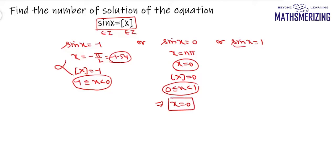Now the third case is when the value of sin x is 1. When sin x is 1, then x is pi by 2, which is 1.54. And here the greatest integer function of x should be 1, so the value of x should lie between 1 and 2. Now 1.54 does lie in this interval, so another solution to this equation is when the value of x is pi by 2.